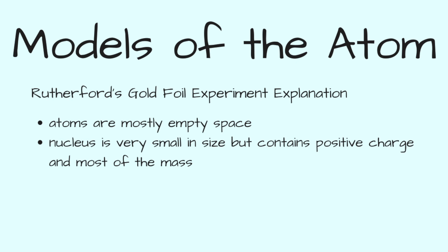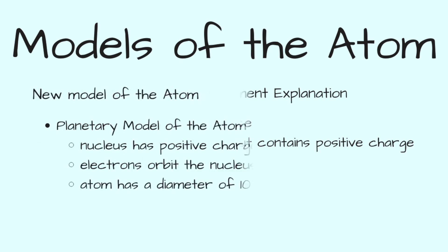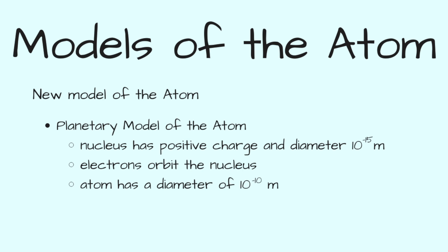Rutherford concluded that atoms are mostly empty space, and that the nucleus is very small in size but contains a positive charge and most of the mass. This led Rutherford to propose a new model of the atom called the planetary model. The nucleus has a positive charge and a diameter of about 10 to the minus 15 meters. The electrons orbit the nucleus, and the atom has a diameter of 10 to the minus 10 meters.